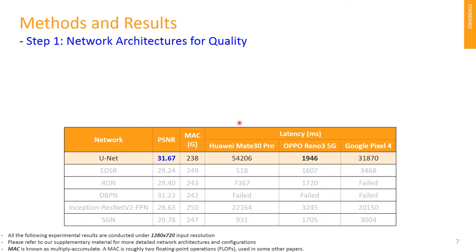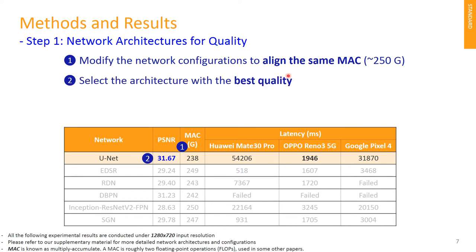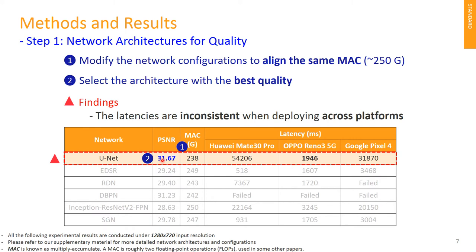In the first step of our proposed guideline, we search for network architecture with the best quality metric. We select network architectures widely used in image enhancement and restoration tasks, which have large diversity in architectures. For fair comparison, we slightly modify the channels or layers of the network to align roughly the same computational complexity. As shown in the table, UNAT gives the best PSNR. Therefore, we choose UNAT as our best architecture. You may notice that the latency of UNAT is highly inconsistent when deployed across platforms. This phenomenon could be solved in the next step.